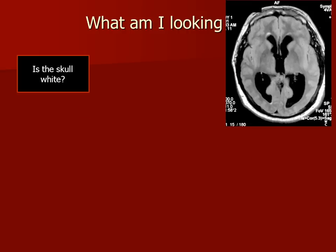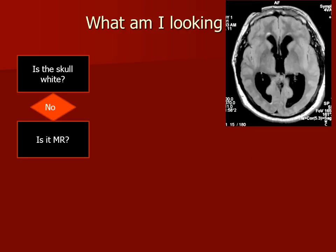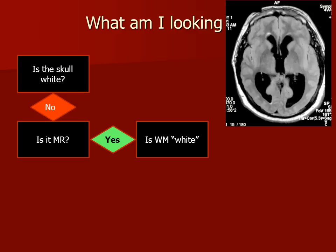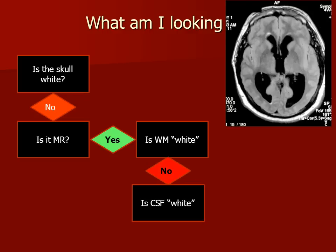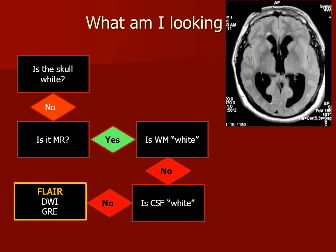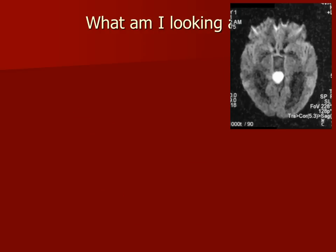Here's another image from the same patient. The skull is not white — it is an MR scan again. The white matter is actually darker than the gray matter. The CSF is dark but not white, which is a little bit confusing, until you remember that this could be a fluid attenuated inversion recovery image, which is typically done as a T2 weighted FLAIR image. So this is a T2 FLAIR, or more simply, a FLAIR image.